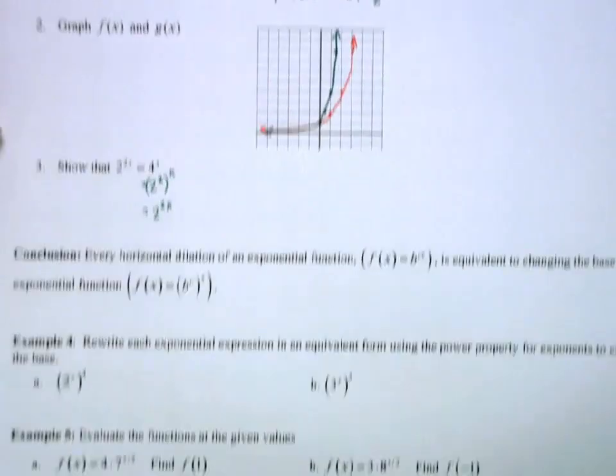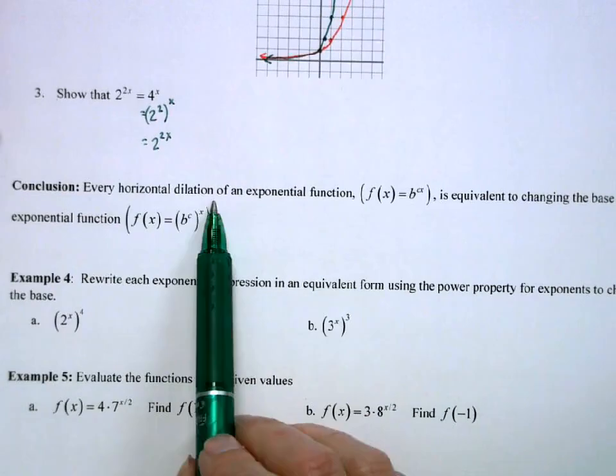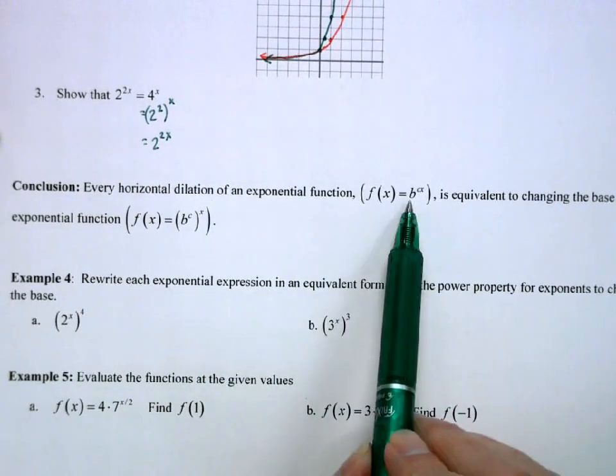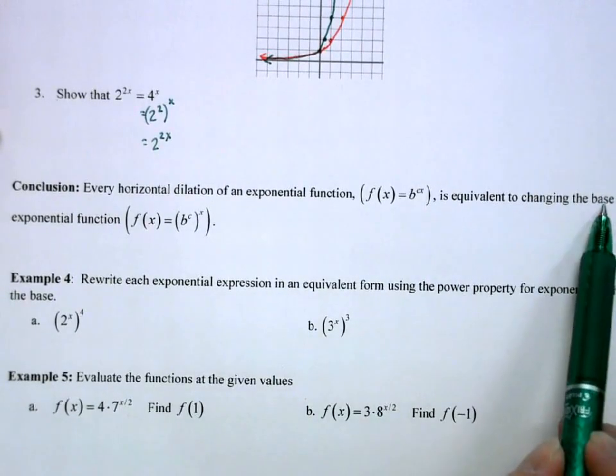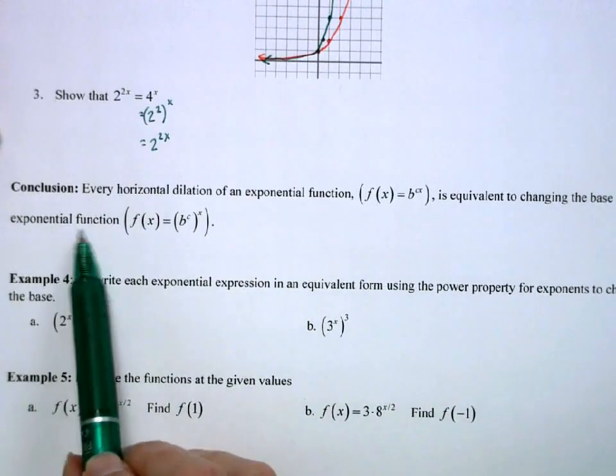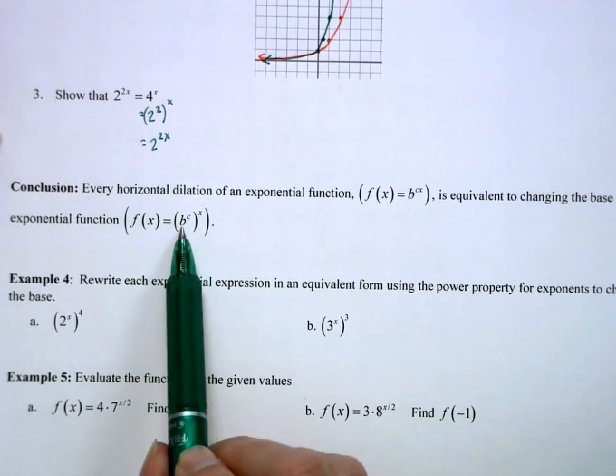So our conclusion is that every horizontal dilation of an exponential function, b to the cx, has an equivalent changing of the base to the exponential function. So my new base would be b to the c to the x.